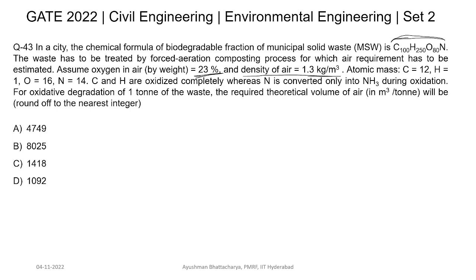Carbon and hydrogen are oxidized completely, whereas nitrogen is converted only to ammonia during oxidation. For oxidative degradation of one ton of waste, the required theoretical volume of air is to be found. The first approach whenever this kind of question comes is to write the chemical equation. C and H are oxidized to produce CO₂ and H₂O, and N is converted to NH₃.